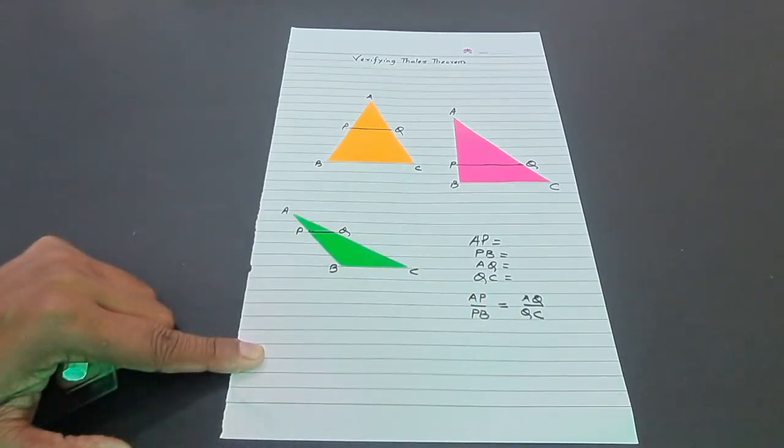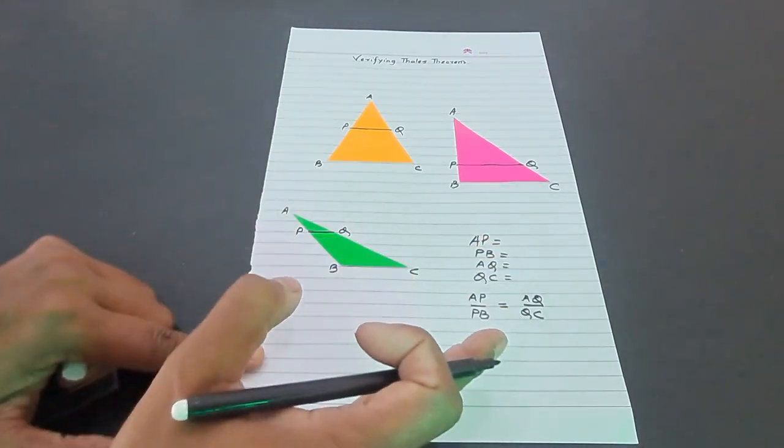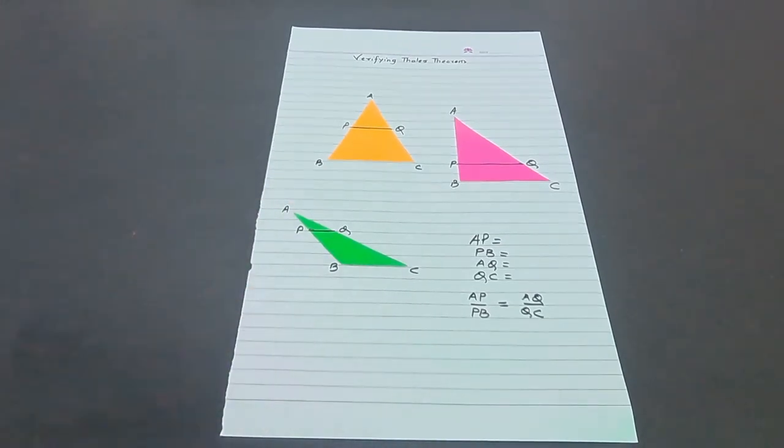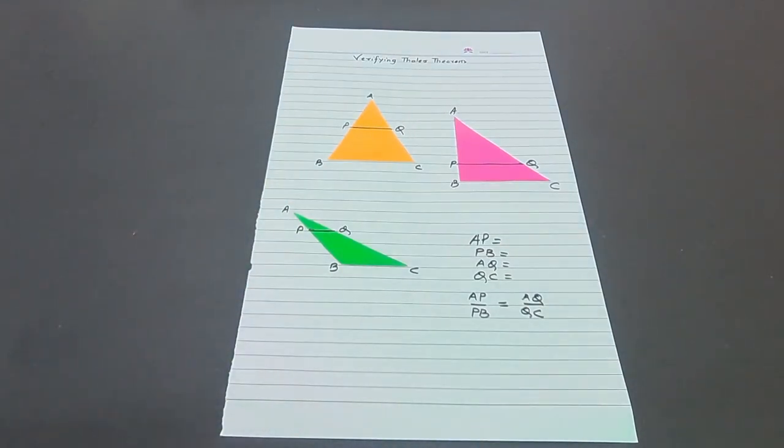If not exactly, they will be approximately equal, and that verifies the Basic Proportionality Theorem or Thales Theorem for these three triangles. Thank you.